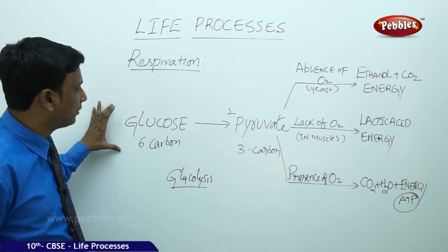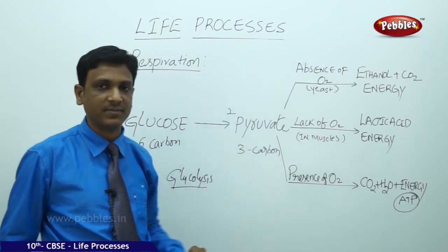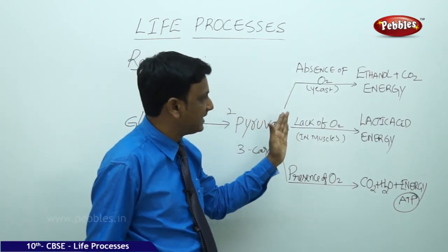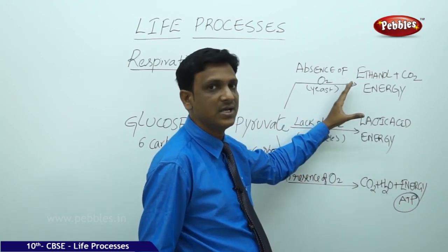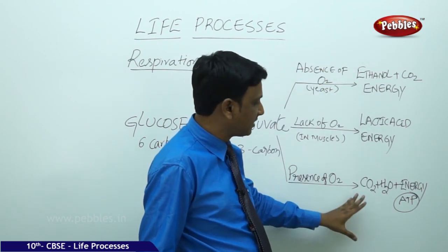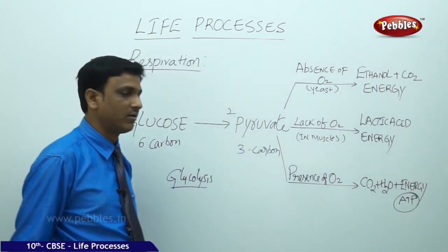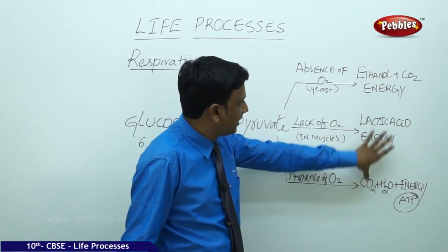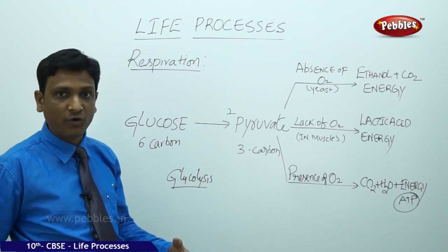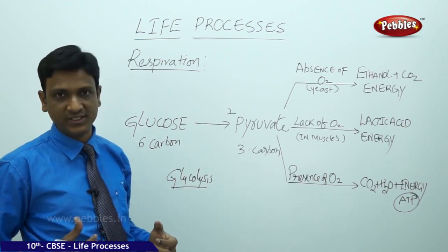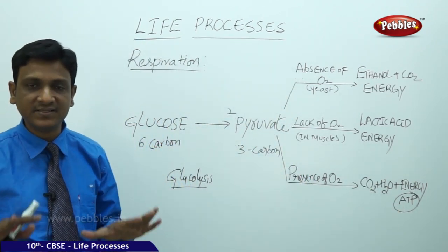This is how glucose is converted to energy in different situations — anaerobic respiration yields less energy plus byproducts like ethanol or lactic acid, while aerobic respiration releases a large quantity of energy along with carbon dioxide and water. In all cases, the energy is finally released in the form of ATP, which the cells can readily use.